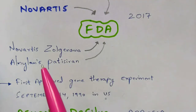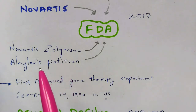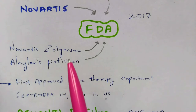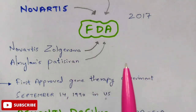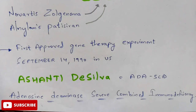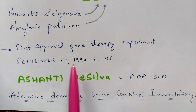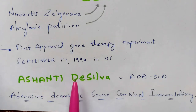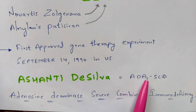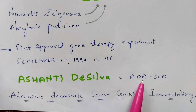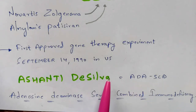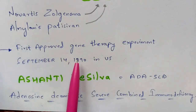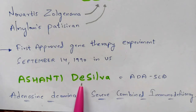The two FDA-approved drugs are Novartis Zolgensma and amilomelisparvovec. The first approved gene therapy experiment was done on September 14, 1990, in the United States on a patient called Ashanti DeSilva, who was four years old and suffering from ADA-SCID — adenosine deaminase severe combined immunodeficiency. The experiment succeeded and she was cured of this genetic disorder.